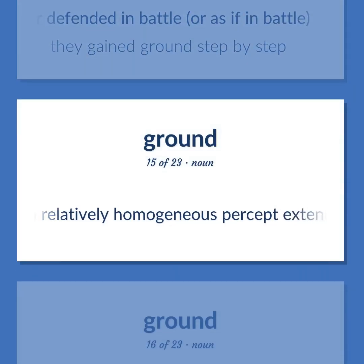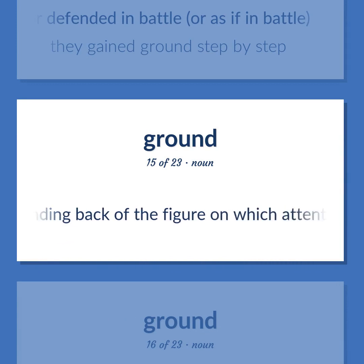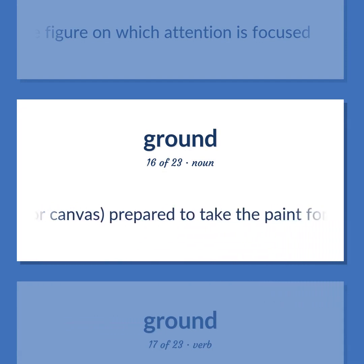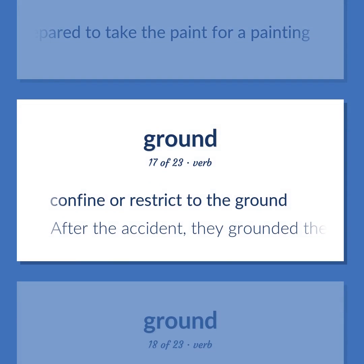A relatively homogeneous percept extending back of the figure on which attention is focused. Art: the surface, as a wall or canvas, prepared to take the paint for a painting. Confine or restrict to the ground. After the accident, they grounded the plane and the pilot.